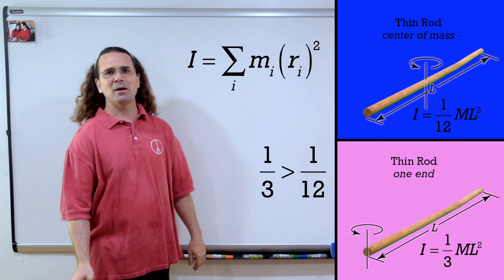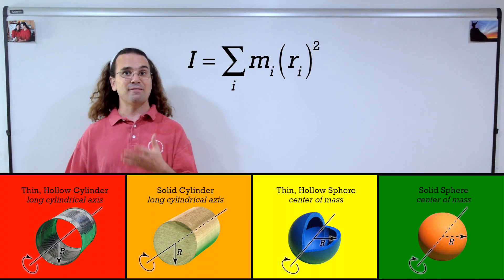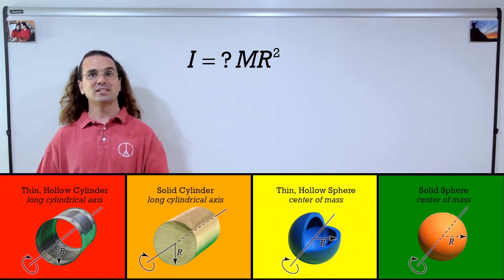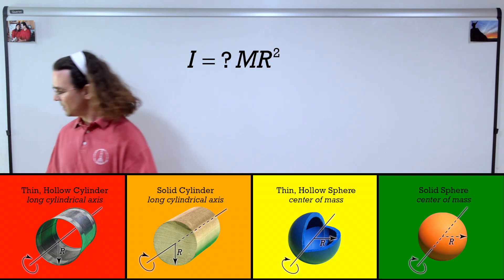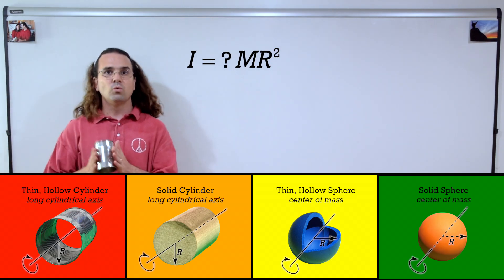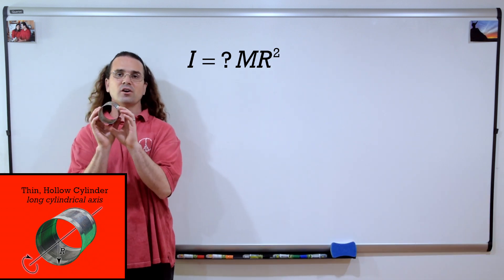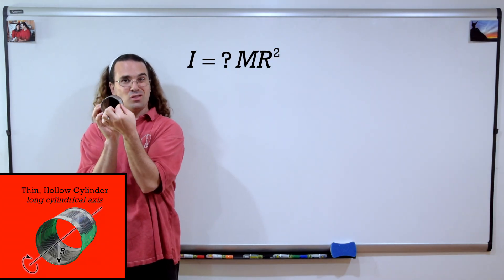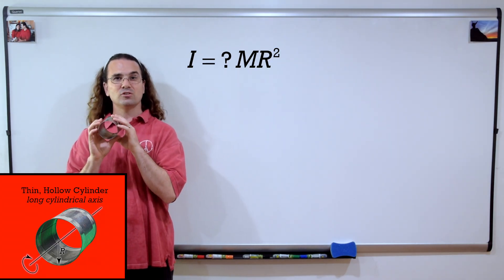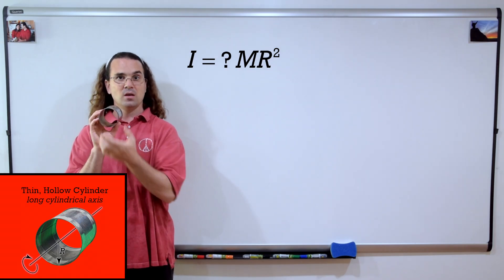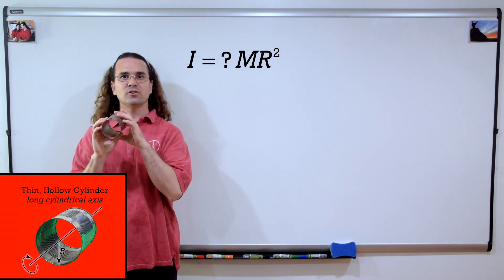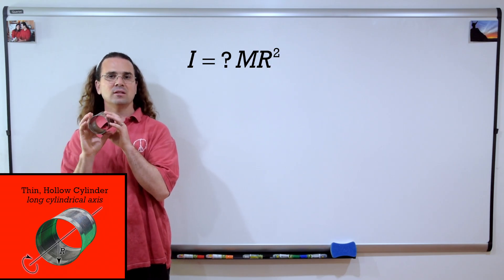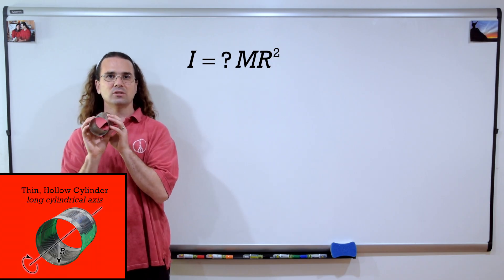Next, let's talk about the other four moments of inertia, where each is a fraction times MR², where M is the mass of the object and R is the radius. Let's start with the thin hollow cylinder about its long cylindrical axis. The word 'thin' here means the thickness of the hollow cylinder is very small compared to the radius of the cylinder. Therefore, we can consider the hollow cylinder to be essentially a two-dimensional object where every piece is a distance R from the axis of rotation.